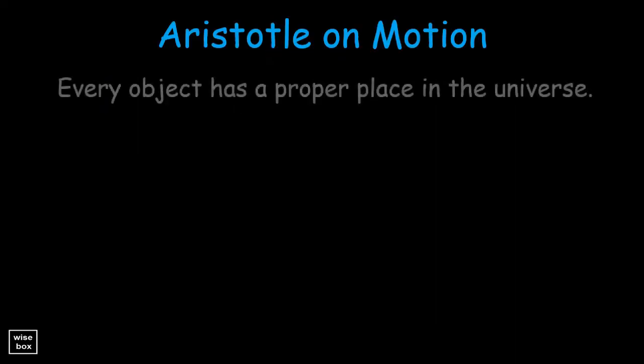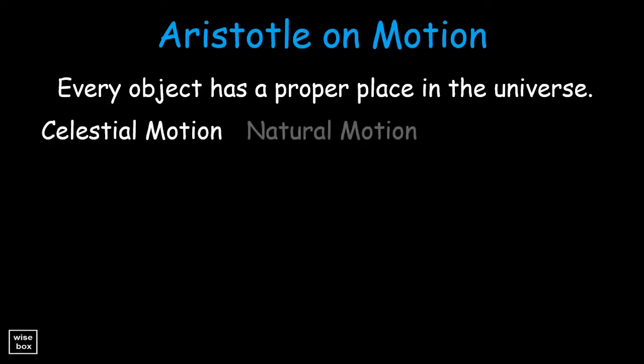According to Aristotle, every object has a proper place in the universe. And their motion can either be celestial motion, natural motion, or violent motion.